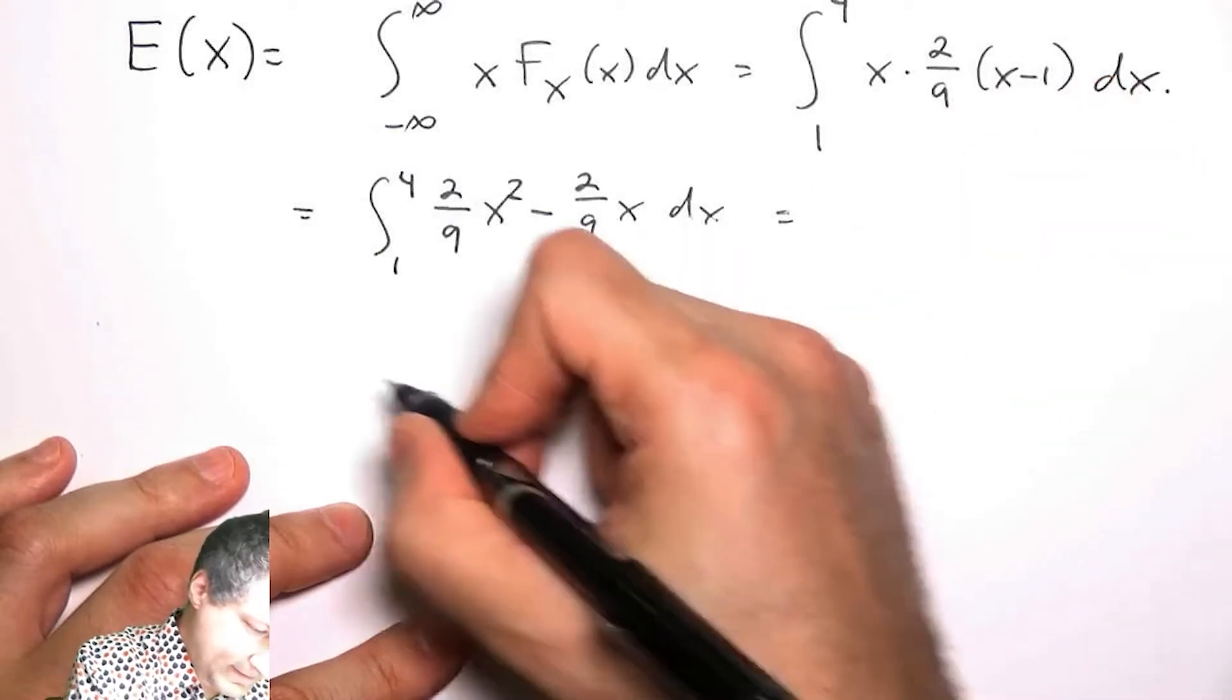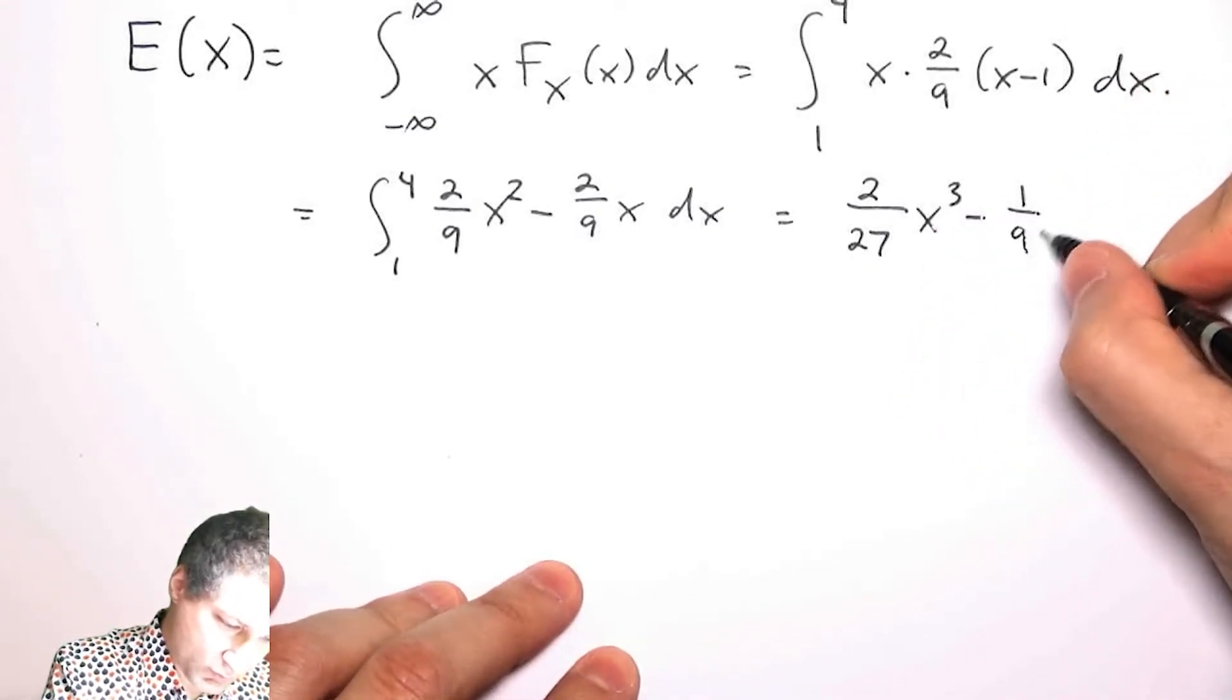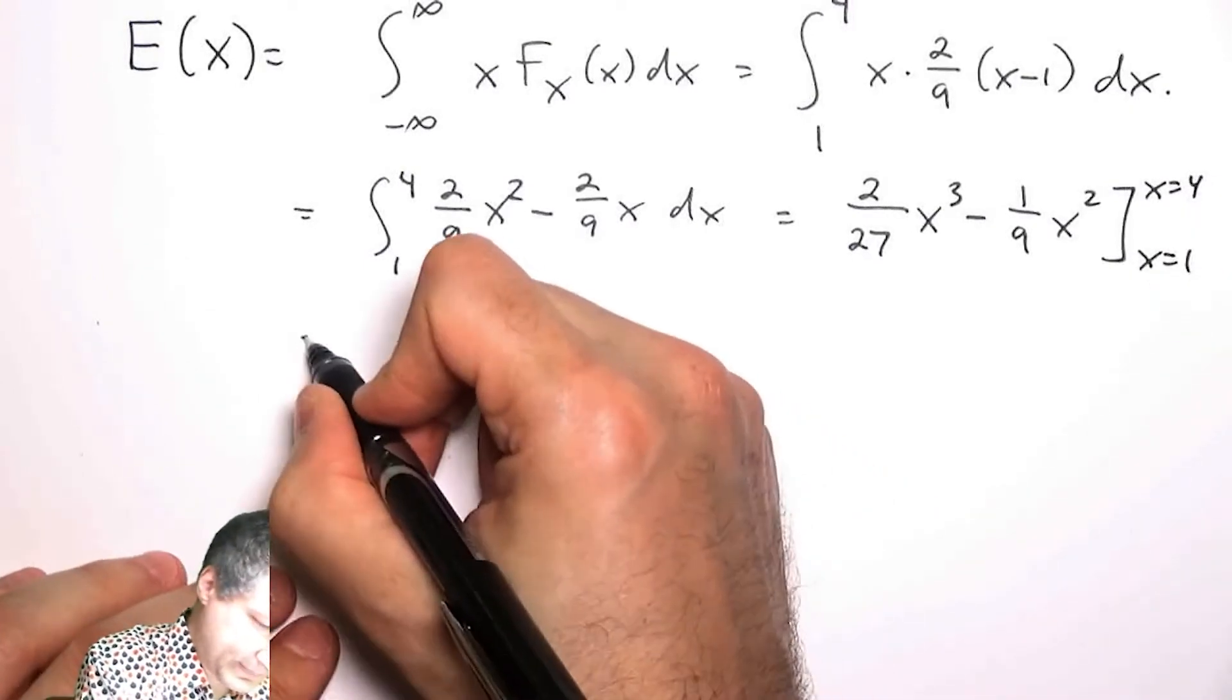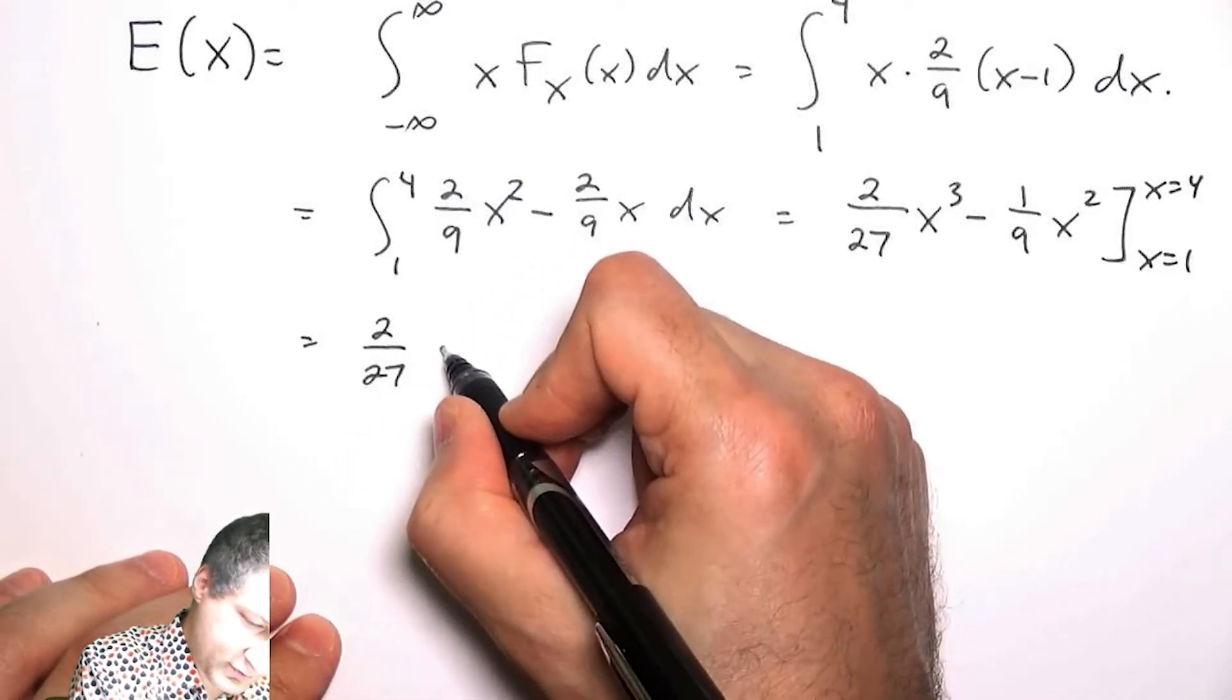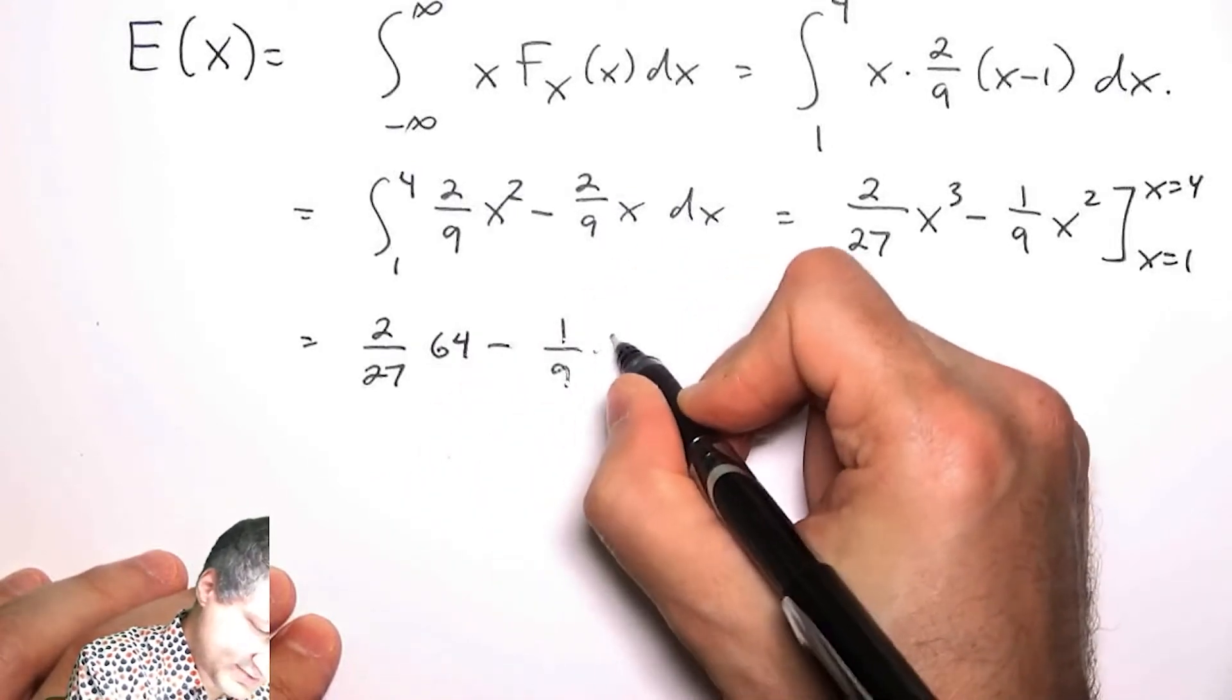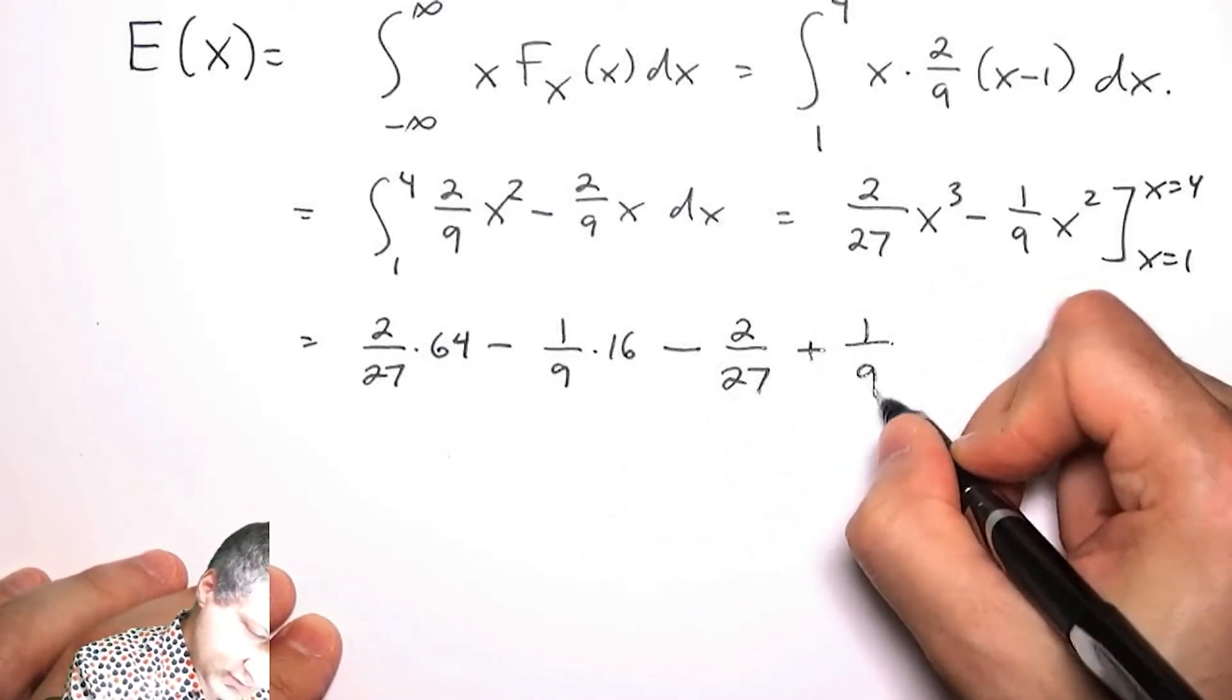which equals 2/27 x³ - 1/9 x², evaluated from x=4 to x=1. So I get 2/27 times 64 minus 1/9 times 16, minus 2/27 plus 1/9.